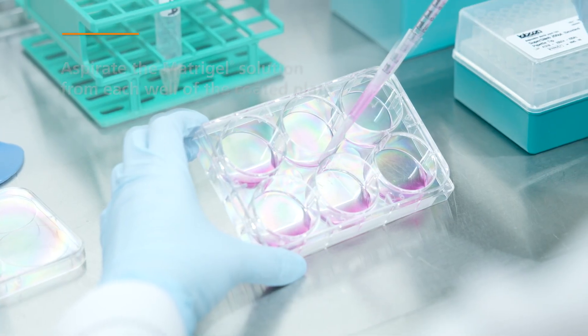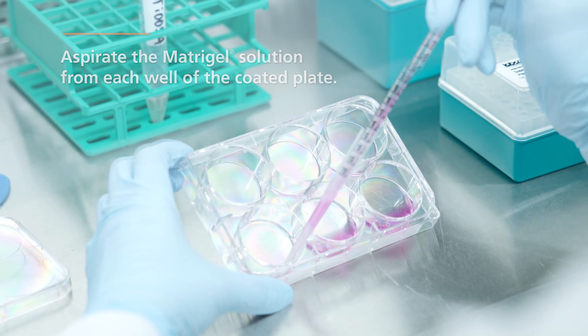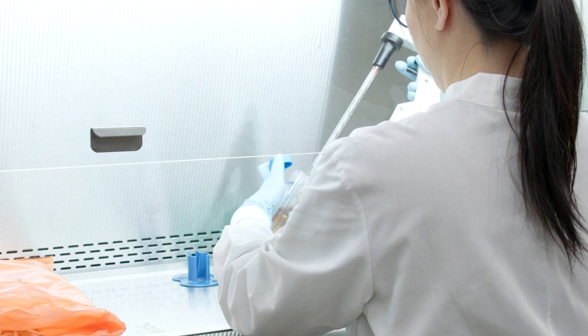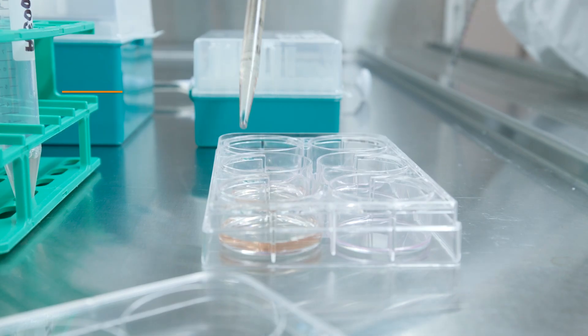Next, take the matrigel coated plate and aspirate the matrigel solution from each well. Then add 2 milliliters of M-Teaser Plus to each well of the 6-well plate.